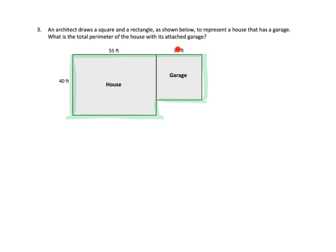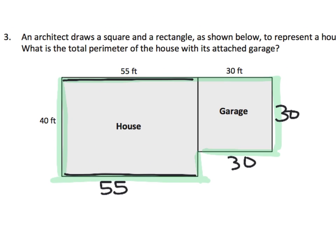Most of these lengths are pretty straightforward. We know that this is 30 and it's a square, so if this side is 30, that means this side is 30 and this side is 30. Since this length right here is 55, that tells us this length right here is also 55. And then this length right here is 40. So we have most of our lengths: 55 plus 40 plus 55 plus 30 plus 30 plus 30. But we have this one missing length right here.